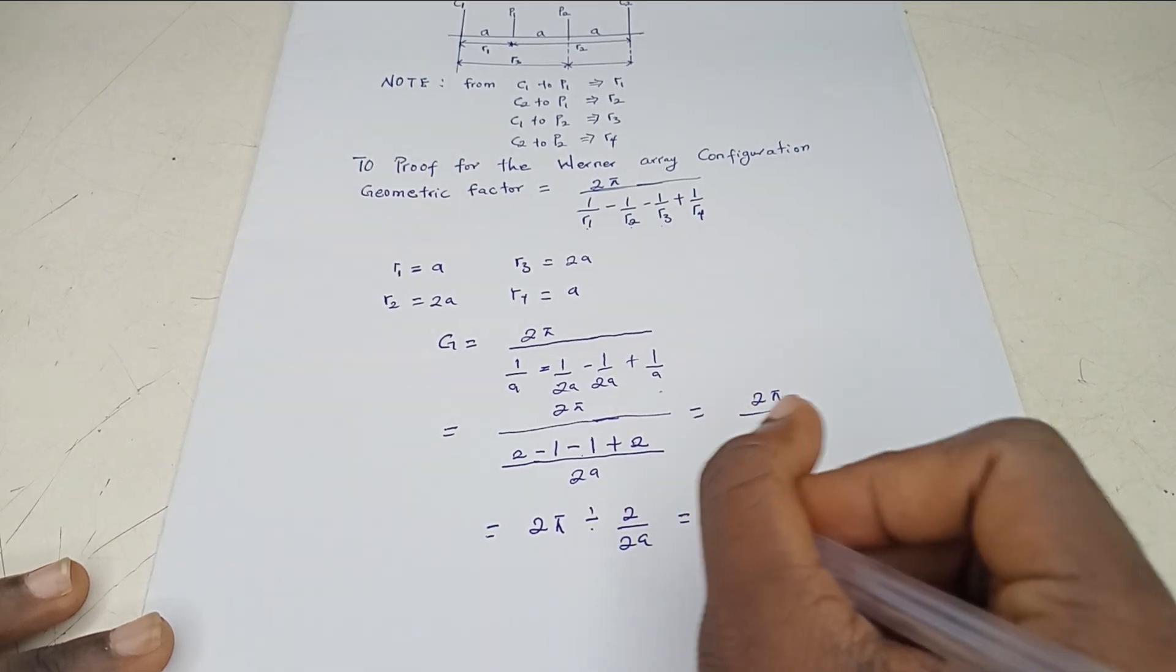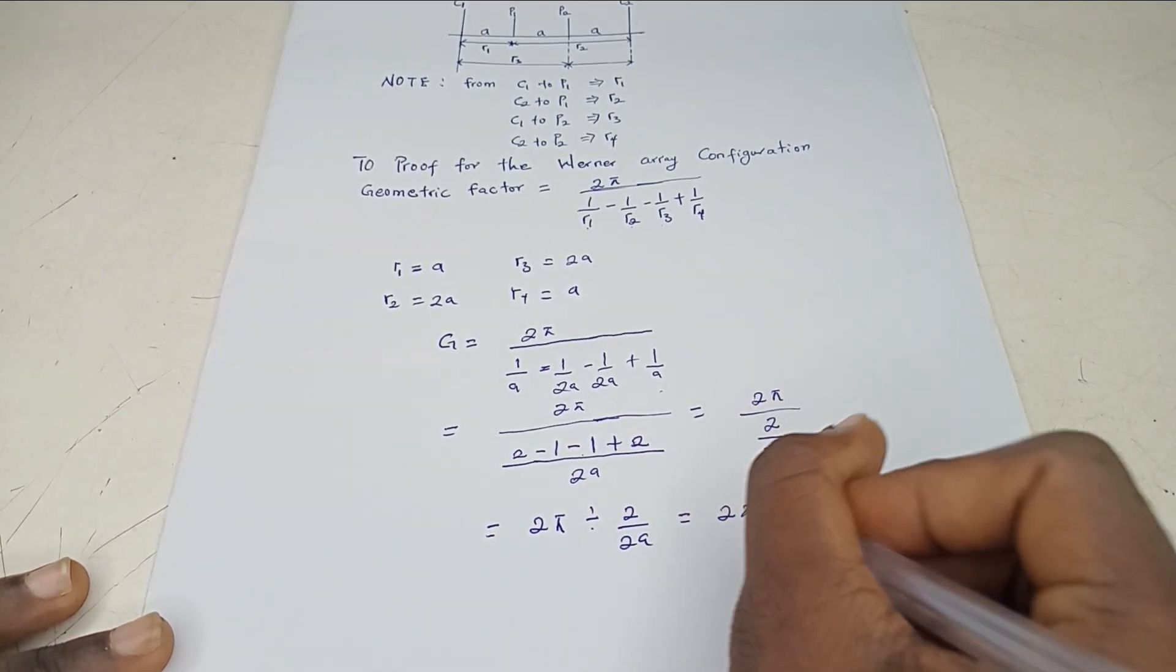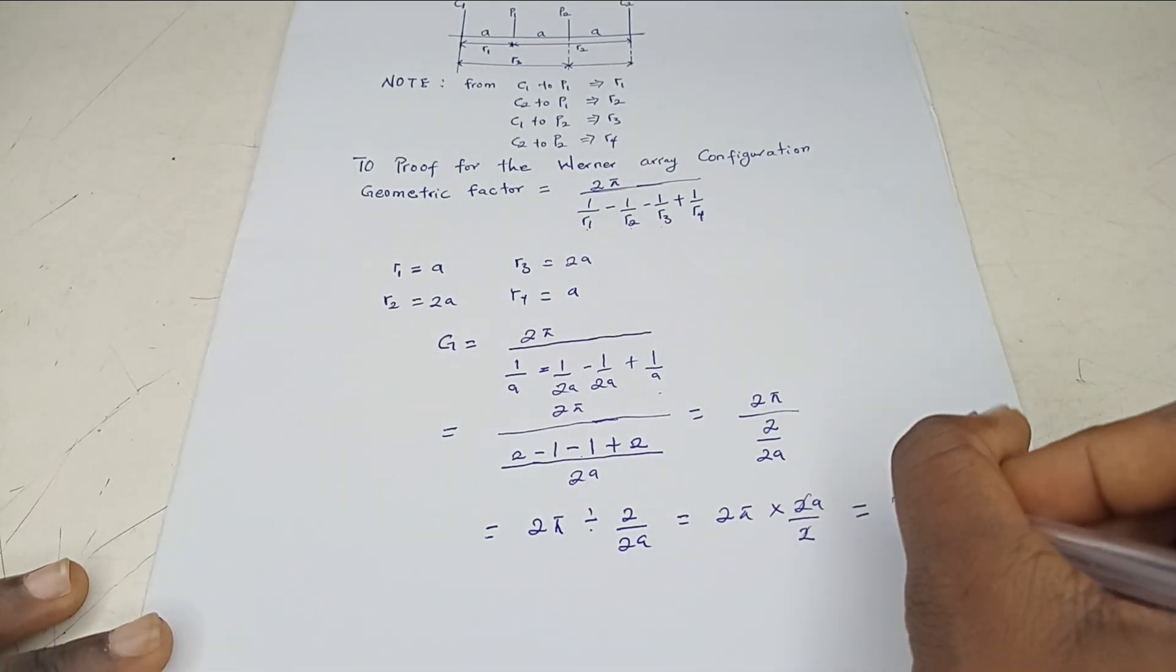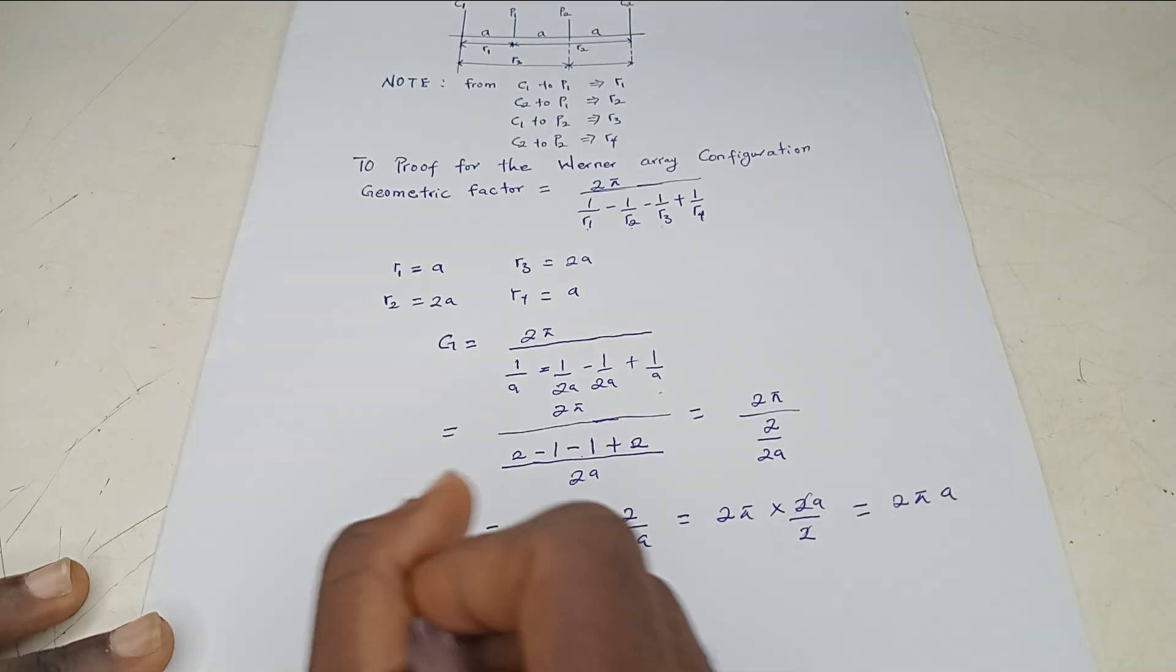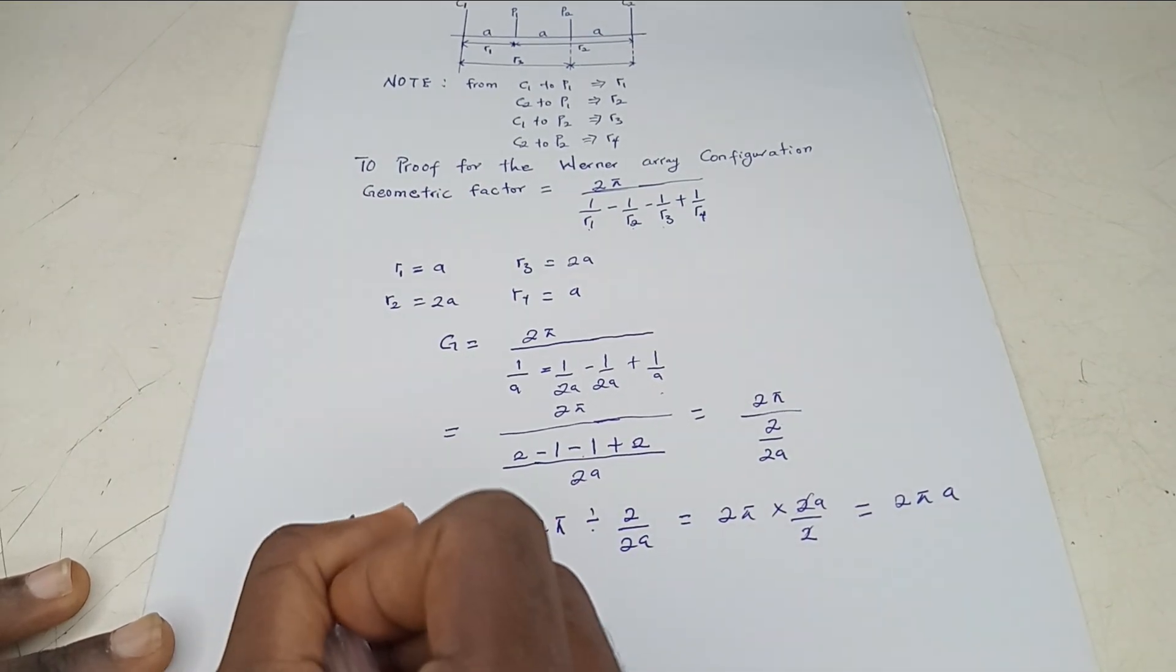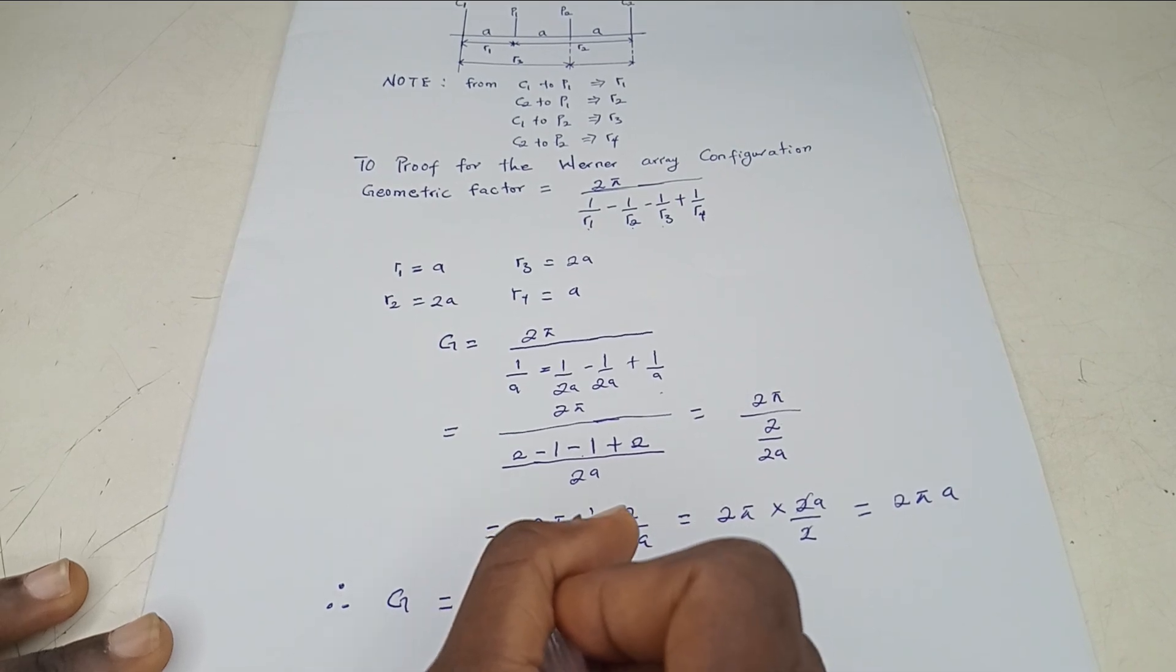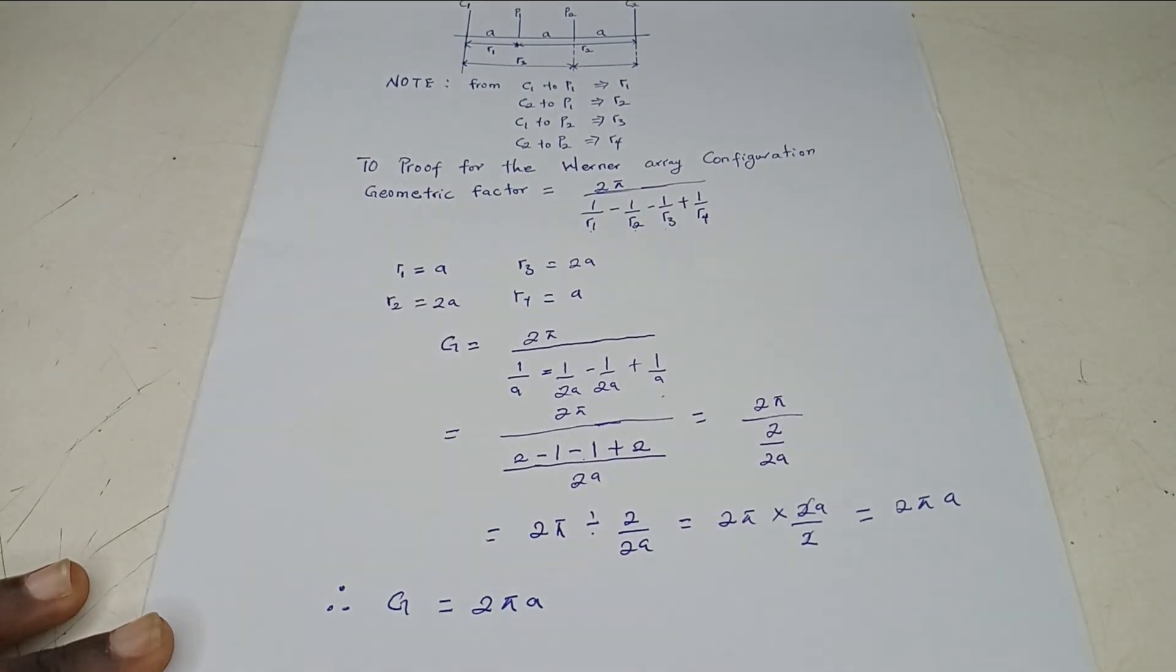So this gives us 2π times 2A over 2. And this gives us 2π times A. So we have 2πA. So therefore, the geometric factor for Wenner configuration is 2πA. Good.